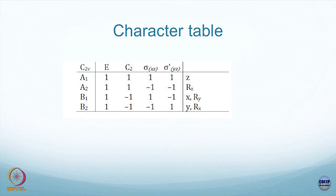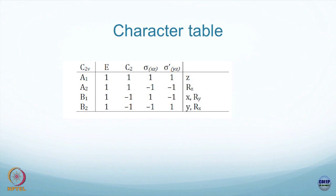Coming back to the basis: we have already seen that rotation about the z-axis does not alter any of these elements, so the unit representation has the z-axis as its basis. But there are subtleties here because when you act with σH - which is in the xy plane - it takes z to minus z. So the trivial representation cannot have the z-axis as its basis; instead it should be a vector in the xy plane, specifically the cross product of vectors with x and y components - what we call an axial vector.